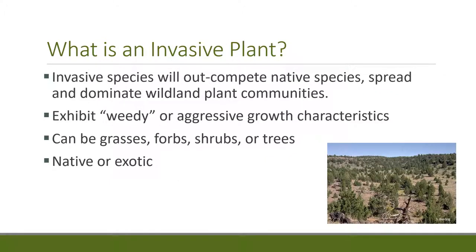Invasive plants are a little different. Not all invasive plants are necessarily on the noxious weed list. Invasive species will outcompete native species and spread to dominate plant communities, often forming a monoculture. They can be grasses, forbs, shrubs, or trees. For example, juniper coming in and invading native rangeland — in that case, the juniper is actually native. So invasive plants can be either native or exotic; juniper is invading now because the fire regime and climatic conditions have changed.